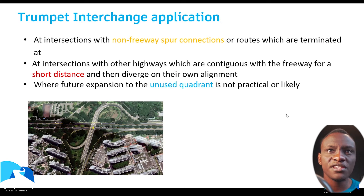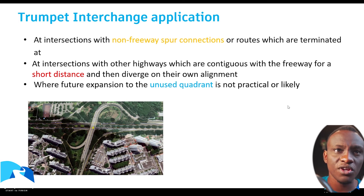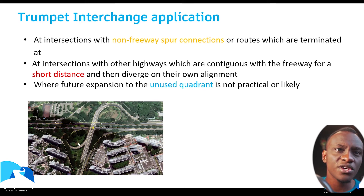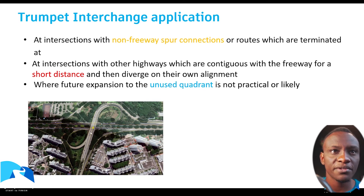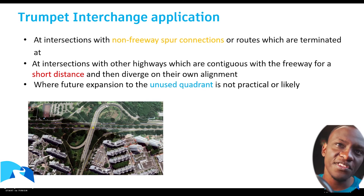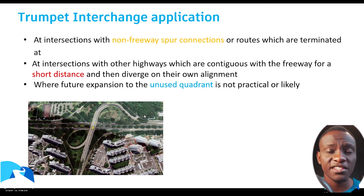This is an example showing the idea we were talking about. This is a trumpet interchange, and there are sections where an additional quadrant is added to allow people coming on the main line to use this ramp. This is located in Singapore, and they can access facilities along the northern side of the interchange.